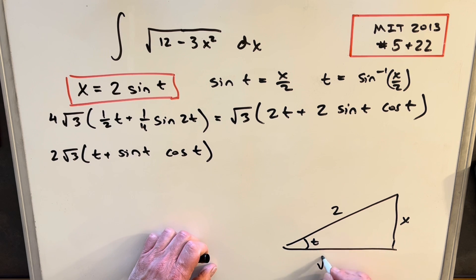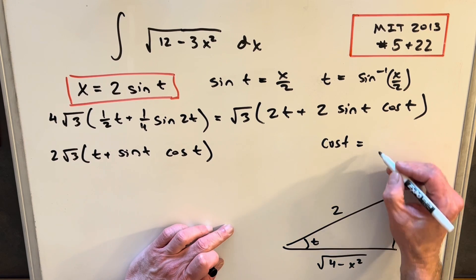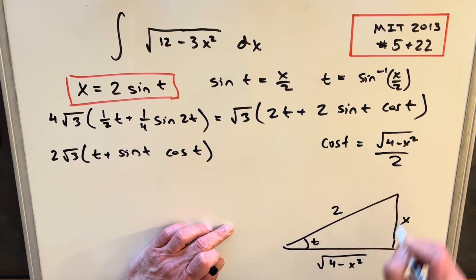But then that's going to, just by using the Pythagorean theorem, we can find this third side, and it's going to be square root of 4 minus x squared. But that makes it easy to find cosine, because cosine is adjacent over hypotenuse. So for cosine of t, we're just going to have this square root of 4 minus x squared over 2.